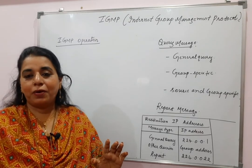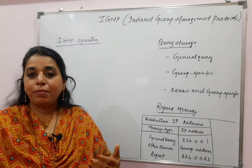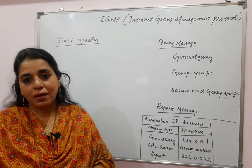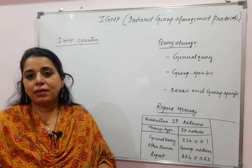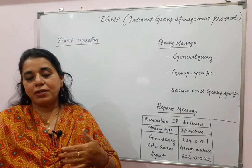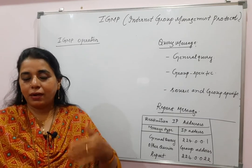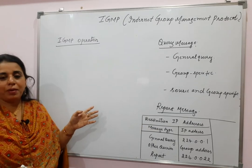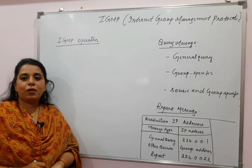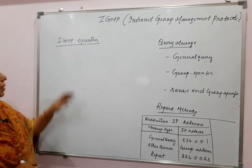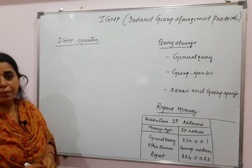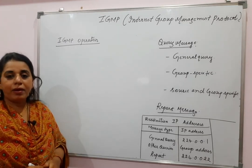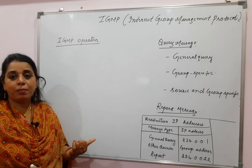IGMP is not a routing protocol. It is going to collect the membership information from all the different networks and pass it on to the routers. It starts giving this information to the upstream router, that router in turn gives it to the other router. IGMP is the actual protocol playing a very important role in multicast routing.